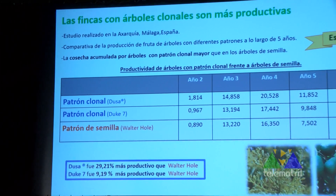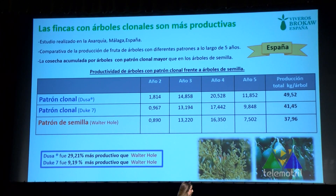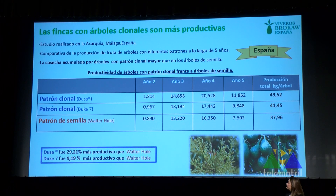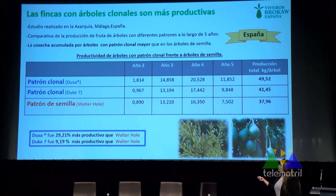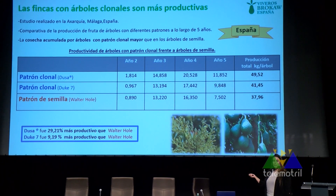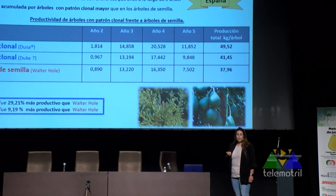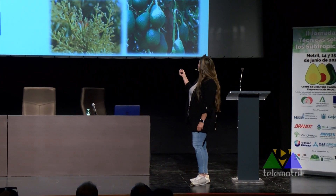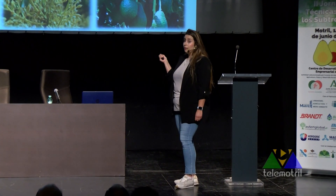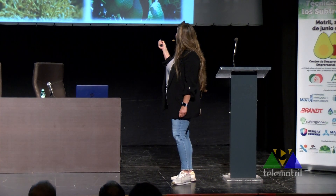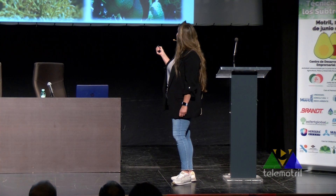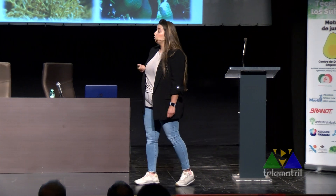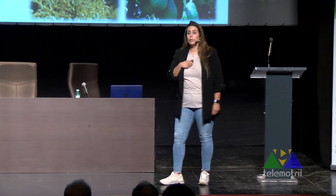Otro ejemplo, en este caso en España, en una finca de la zona de Vélez-Málaga. Las diferencias no son tan acusadas pero sigue habiendo bastante diferencia. Se comparó patrón clonal Dusa, patrón clonal Duque 7 y patrón de semilla Walterholt, similar al Zutano, también de genética mexicana. Mirando la producción total acumulada en kilogramos por árbol: 49 en el caso de Dusa, 41 en el caso de Duque 7, y 37 en el caso de Walterholt. Por lo tanto, Dusa fue un 30% más productivo y Duque 7 un 10% más productivo, lo que traducido en kilos y euros supone bastante beneficio adicional.